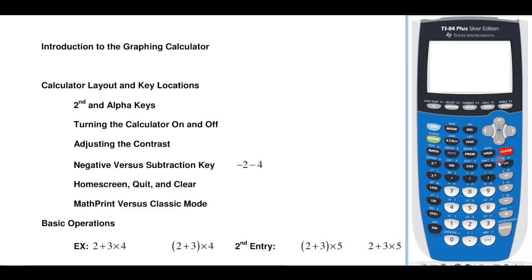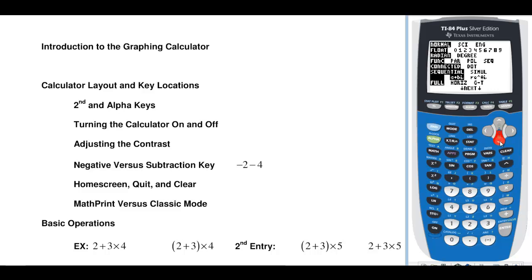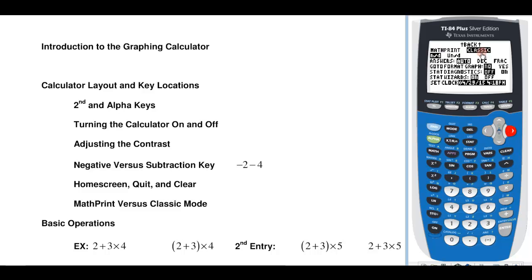If I want to clean up my home screen I just hit the clear button. The other thing to draw your attention to is your calculator, if it's one of the newer models with the newer operating systems, has a mode. If you hit the mode button, the default is math print mode, which makes your expressions look more like they do in a math book. There's also a classic mode, and I prefer classic mode simply because as you go on in algebra the problems tend to be easier to enter, especially when you're graphing. So I'm going to do this in classic mode.